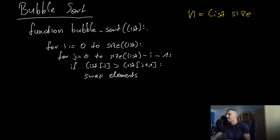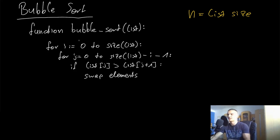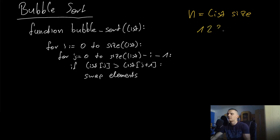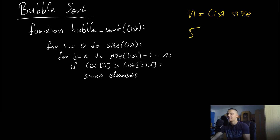Inside that loop, we run a second loop from j equals zero to the size of the list minus i minus one. The outer loop runs n times because we're not checking whether the list is already sorted — it runs through all iterations regardless. For example, if the list [1, 2, 3, 4, 6, 5] gets sorted after one iteration, we still don't stop early in this pseudocode.